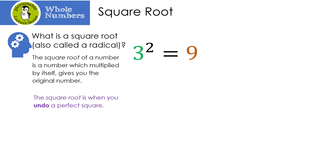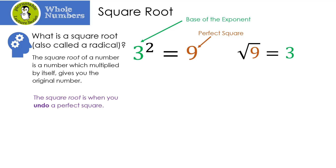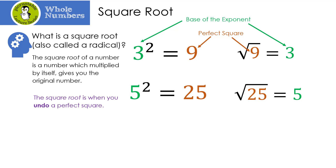Let's actually do a square root. We know that 3 squared equals 9 — 3 is the base of the exponent and 9 is the perfect square. The square root is when you undo a perfect square, so the square root of 9 is 3. The 9 is inside my radical sign and my answer ends up being the base. 5 to the second power, or 5 squared, is 25, so the square root of 25 is 5. 10 squared is 100 — the square root of 100 is 10.